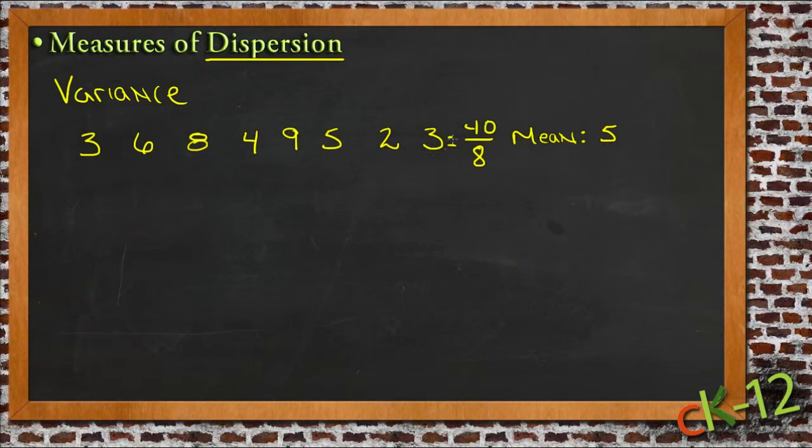One way to identify how trustable or how likely these numbers are to represent a real average is to figure out how far each of these numbers is from the mean. So immediately, I could just go through and subtract them. I could take three minus five, and that would give me a difference of negative two. Six minus five would give me a difference of one. Eight has a difference of three, negative one, four, zero, negative three, negative two.